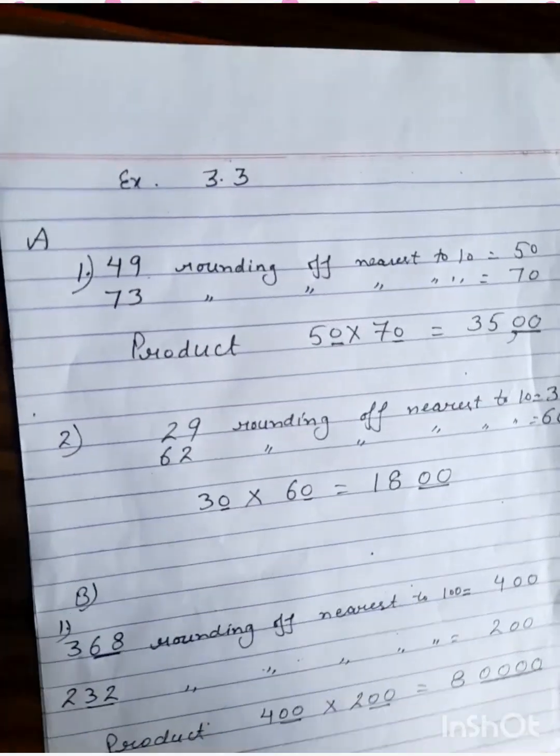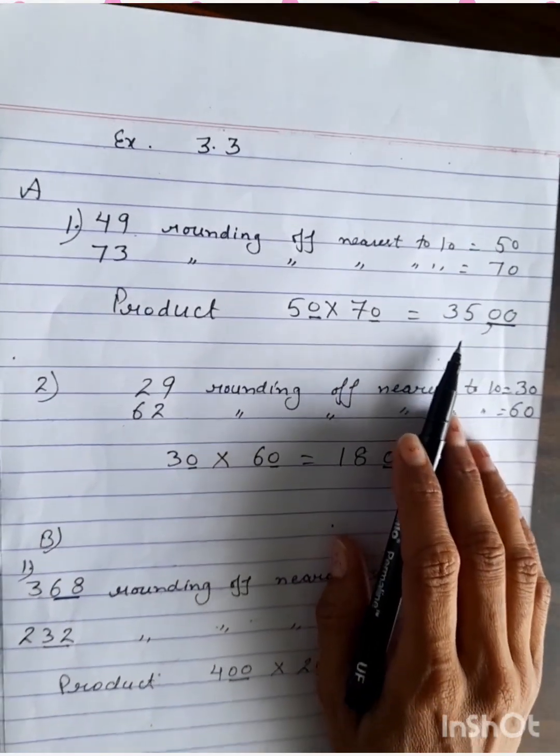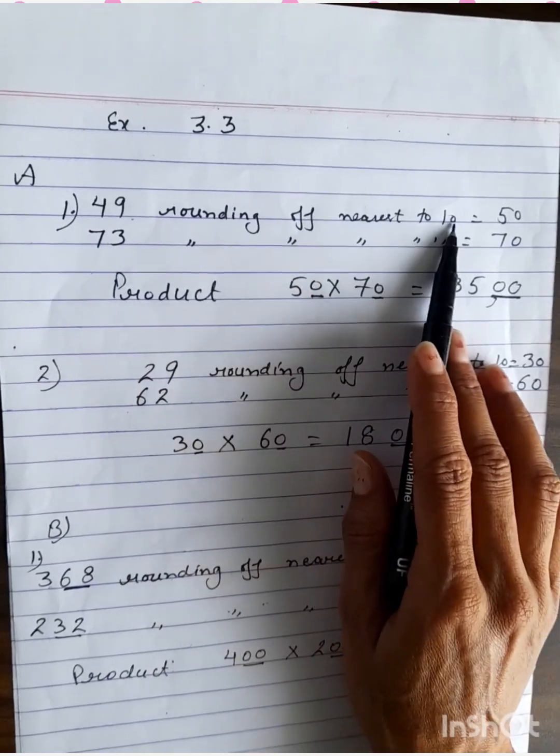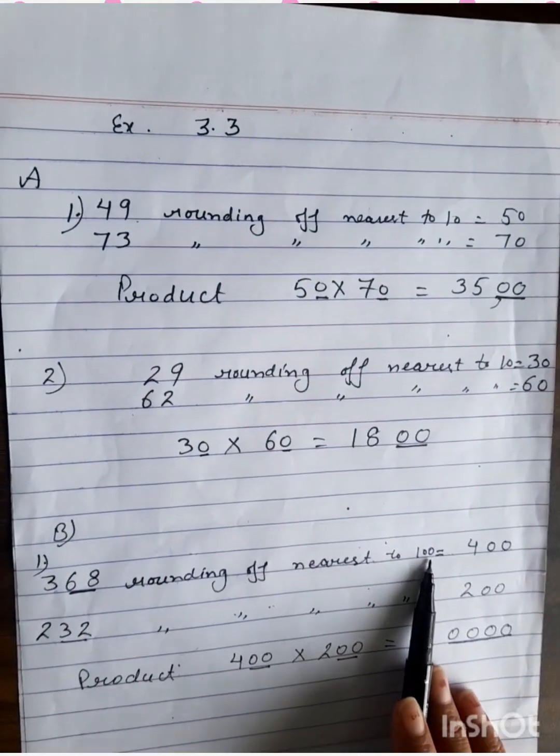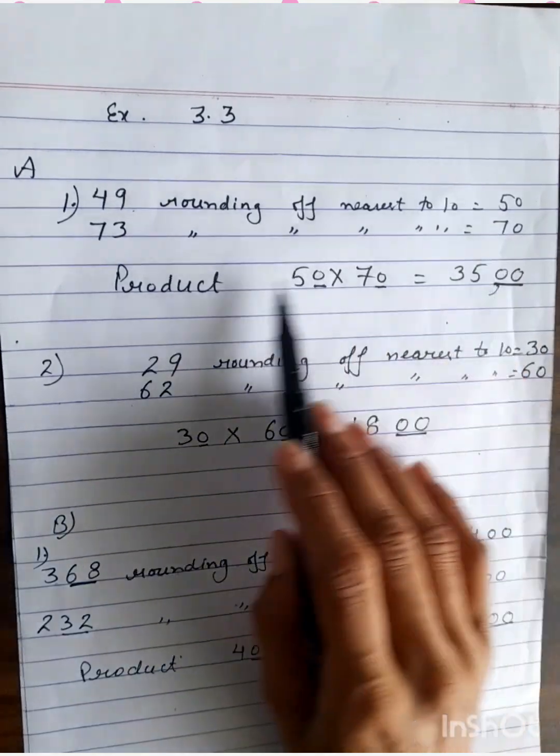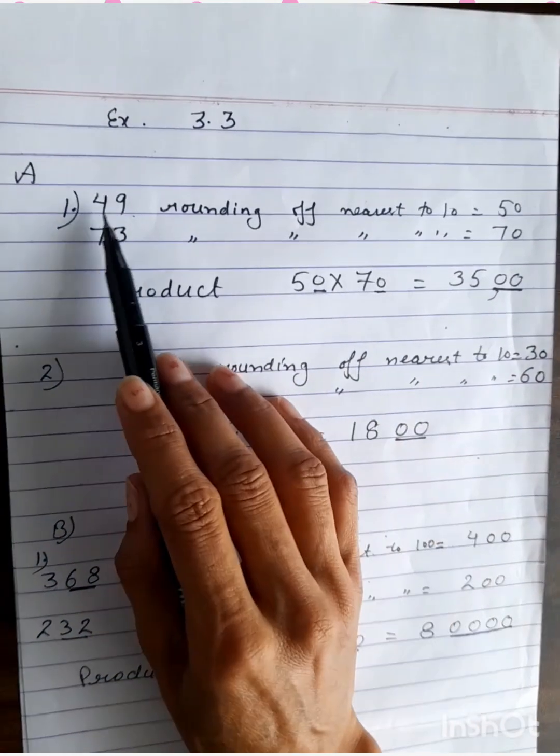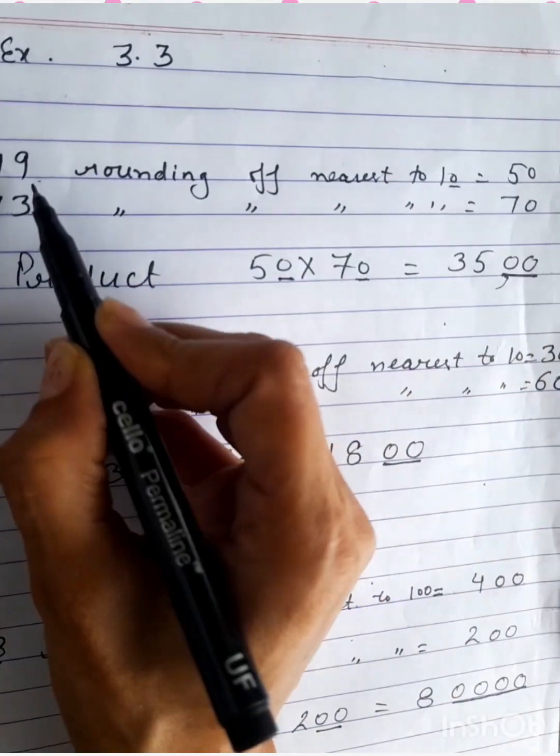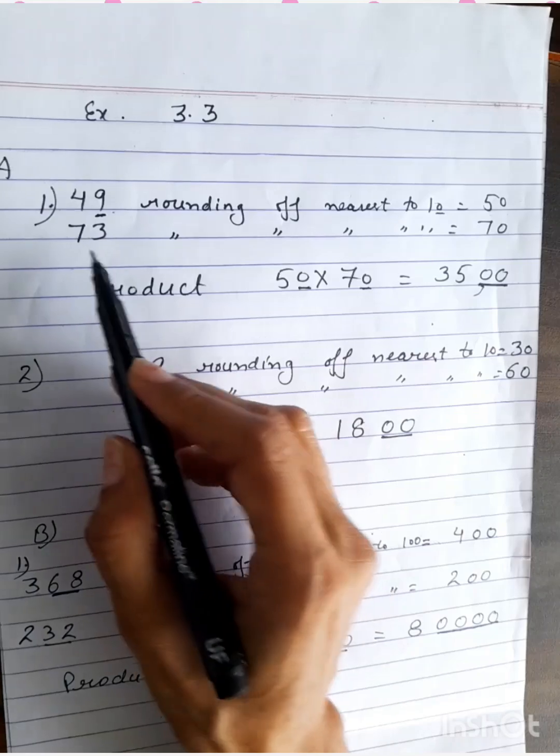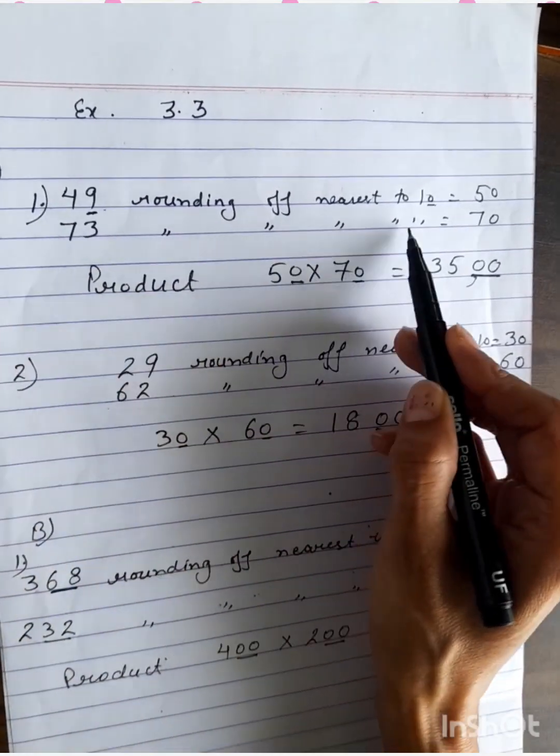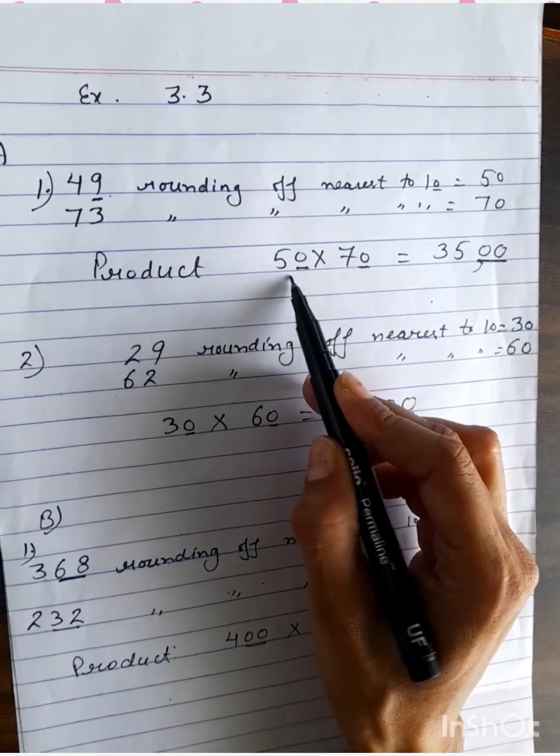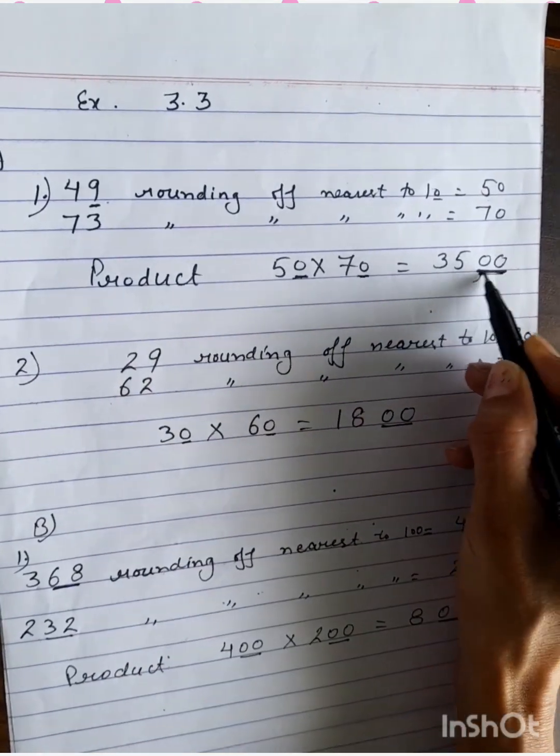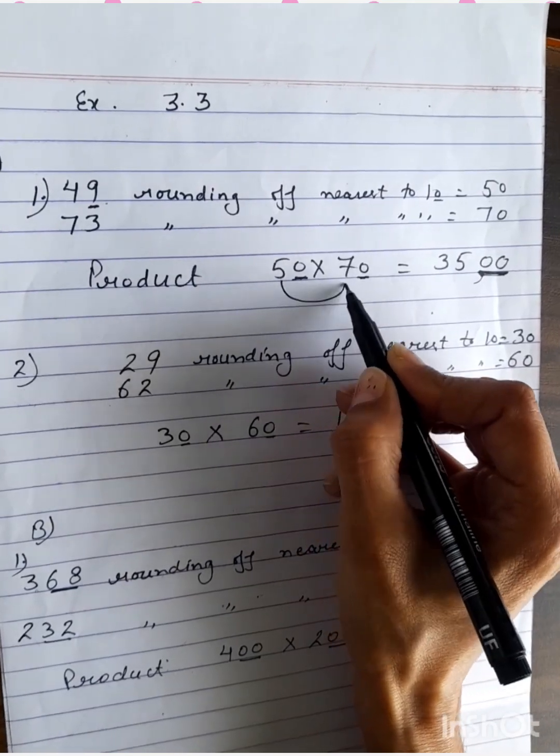The next topic is, which we have done already in the previous term, first term. That is rounding of nearest to 10 and rounding of nearest to 100. First of all, we will write the rounding numbers. Then we will find the product of those numbers. Like 49, rounding of nearest to 10. 49, 10 has 1, 0. So 49, that is 50. 73, rounding of nearest to 10, that is 70. So 50 into 70, there are two zeros that I have written directly. Then 5 times 7 is 35.